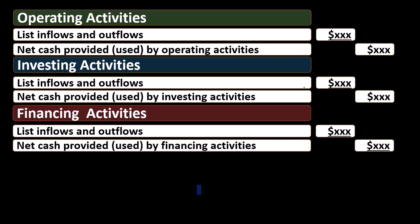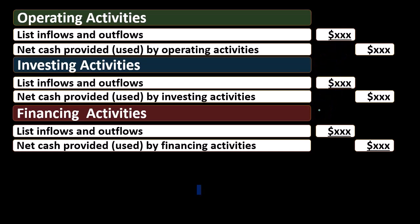Then we will have the financing activities — the same concept, listing inflows and outflows — and then the net cash provided or used in financing activities. Our major goal when thinking about the cash flow statement is determining which category a cash flow belongs to: is it operating, investing, or financing? We will go through a thought process in a later presentation for how to best determine this.